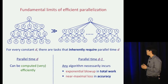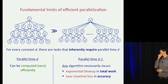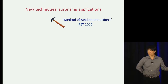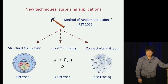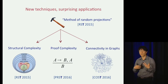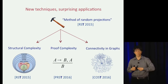To prove this result, we had to develop new techniques to study circuits — a technique we call the method of random projections. One of the most fun and exciting aspects of this project is that we have since found applications of this technique to a range of problems in other areas: structural complexity, the study of classes like P and NP, proof complexity, and interconnectivity in graphs. We are still trying to understand the power and reach of our techniques, and this really speaks to the interconnectedness of complexity theory.